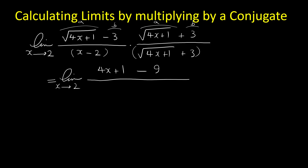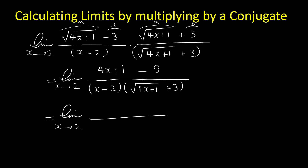When multiplying the expressions in the denominator, just put brackets around them — leave them in this form and don't distribute x minus 2 in the second bracket. Now if you look at the top we have 4x minus 8, and in the bottom we have x minus 2 times the square root of 4x plus 1 plus 3.